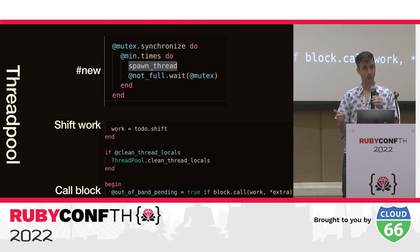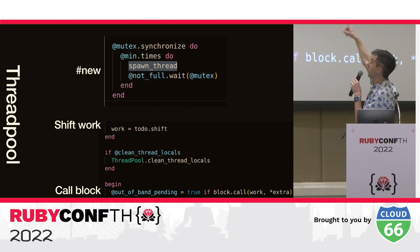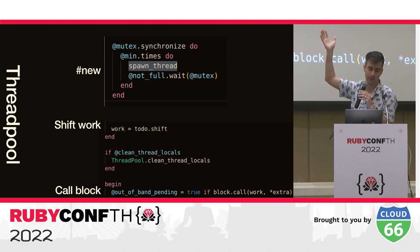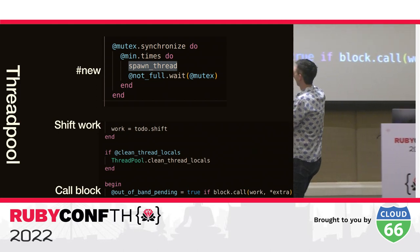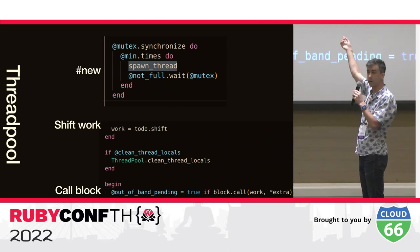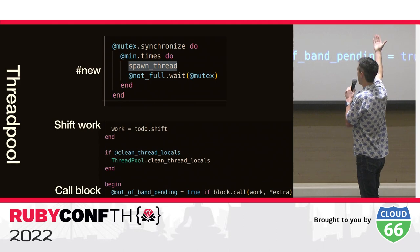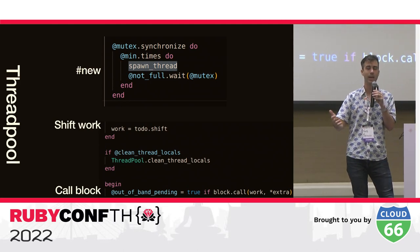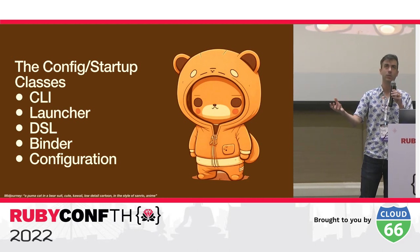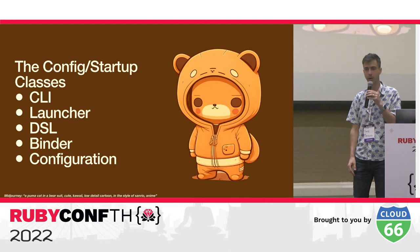Then we pass the socket to the thread pool. We spawn the number of threads you configured. Each thread takes work off the to-do array — shifting items off and calling the block you started the thread pool with. You start the thread pool with a block: for all work items, call this block with the work as arguments.